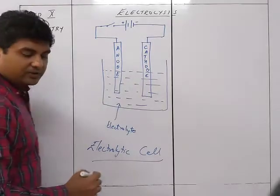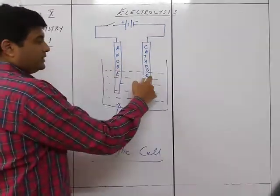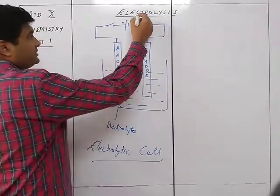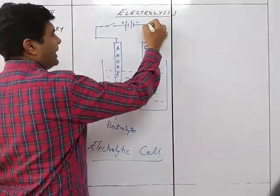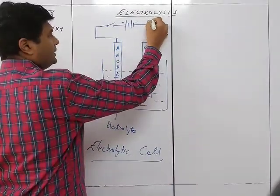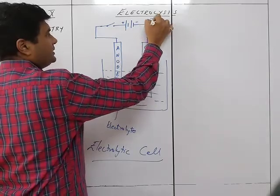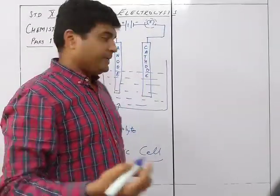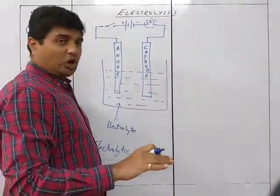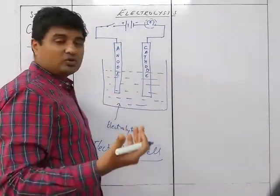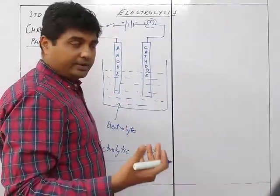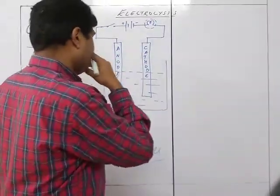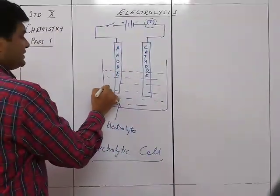So this is the anode, this is the cathode, and this is the electrolyte. There will also be a bulb in the circuit. The bulb will indicate that the flow of current is going through. If the bulb is off, it means the electrolysis has stopped or the electrode material has run out.